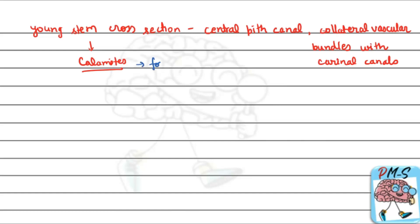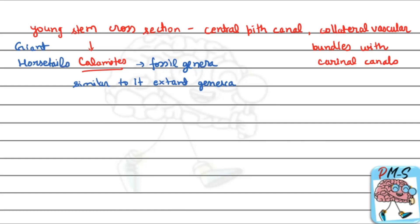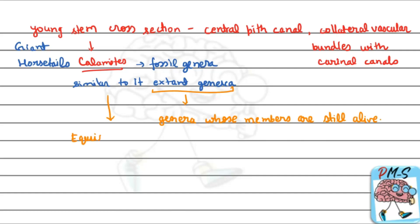So this was the structure of Calamites, which is a fossil genus. Since Calamites is also known as giant horsetails, the extant genus similar to it is Equisetum. Extant genus means a genus whose members are still alive. So Calamites is our fossil genus, and the similar extant genus is Equisetum.